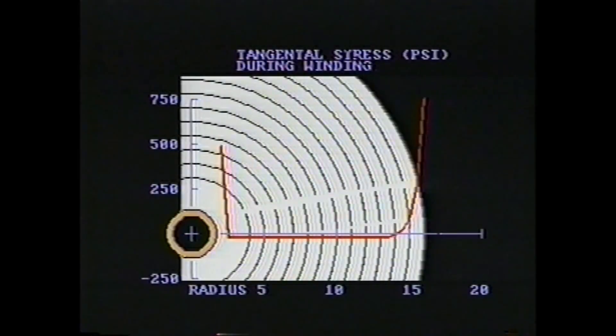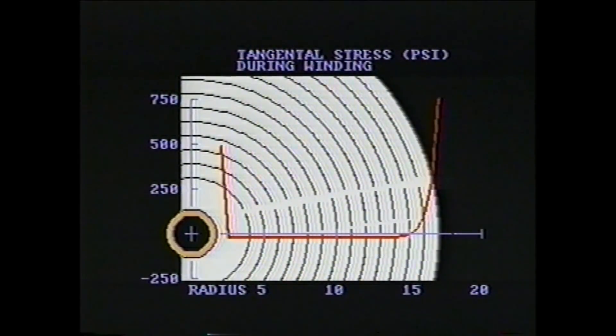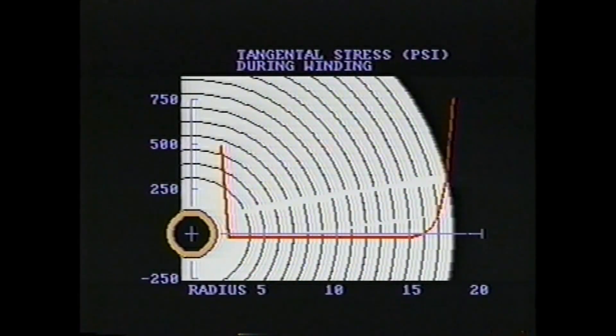However, through the bulk of the roll the tangential stress is nearly constant and has a compressive value equal to the radial stresses. This compressive region is where defects such as starring and creping are likely to occur.